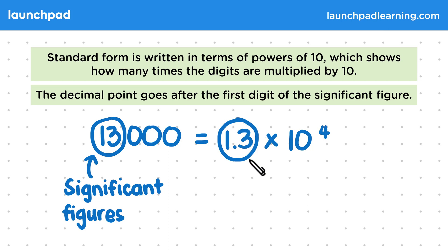In standard form, this value here will always be equal to or greater than 1 and less than 10. This small number 4 that sits above the 10 is the power of 10. It tells us how many times this number is multiplied by 10 to get to this number. So in this example, 1.3 is multiplied by 10 four times to get 13,000.